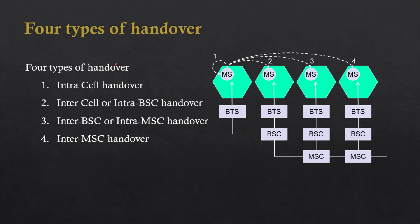Next, the types of handover for an intracellular system can be of four types: intracell handover, intercell or intra-BSC handover, inter-BSC or intra-MSC handover, and inter-MSC handover.